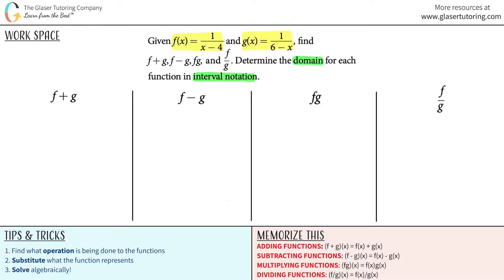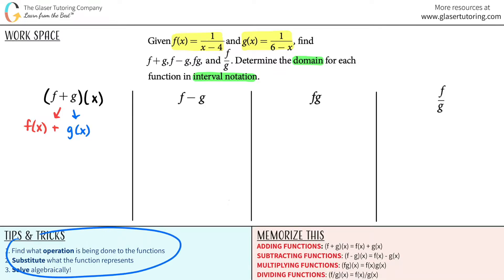So the first one is f plus g of x — this is addition. This is the same thing as saying f of x plus g of x. All you have to do is find out what operation is being done — in this case, it's addition — and then substitute what each function represents and solve.